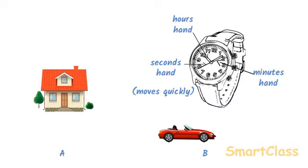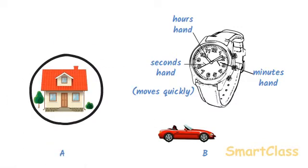In science, when an object is stationary or not moving it is said to be at rest. Thus, a house and tree for example are said to be at rest.